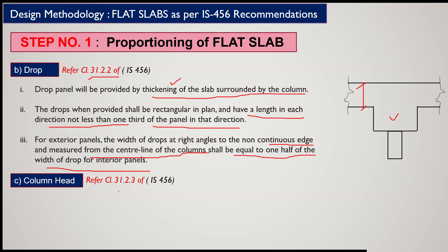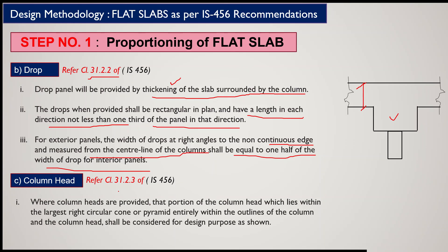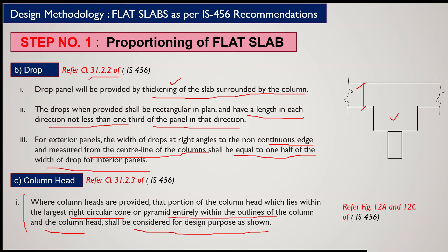The third component is the column head. Refer to clause 31.2.3 of IS456. Where column heads are provided, that portion of the column head which lies within the largest right circular cone or pyramid entirely within the outline of the column and column head shall be considered for design purposes, as shown in figures 12A and 12C of IS456. Further details will be covered in the design section.